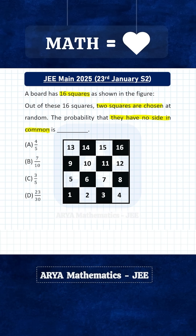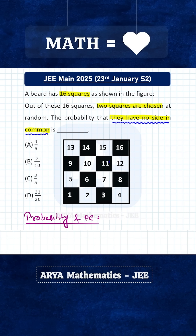This is a very interesting problem combining probability and PNC. We have to find the probability that any 2 randomly selected squares will have no side in common. Instead of finding this directly, we will first find the probability that they will have a side in common. Then the required probability will be 1 minus that probability.